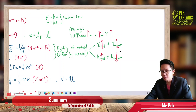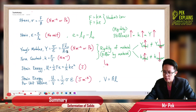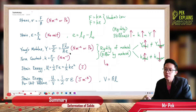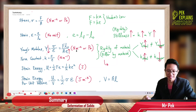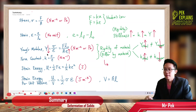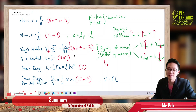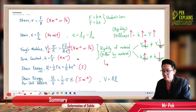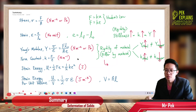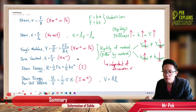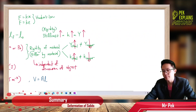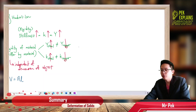So the rigidity is independent of the dimension of the object or the wire. Can we say that the higher the elongation, the lower the Young's modulus? No. Can we say the smaller the original length, the lower the Young's modulus? No. It does not depend on dimension. It just depends on the material. The rigidity is independent of dimension.